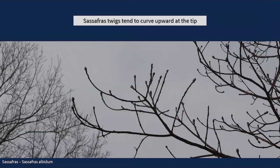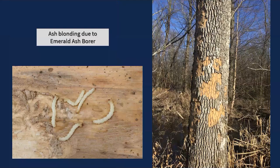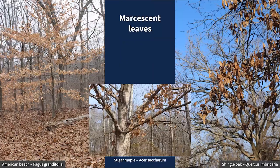A couple more unique feature examples: sassafras twigs tend to curve upward towards the tip, which is really noticeable. Other examples include the spines on devil's walking stick, or the remnants of old fruit that stay throughout the winter on yellow poplar. One unfortunate unique feature now seen across Illinois that actually helps you identify ash trees is blonding due to emerald ash borer — trees impacted by that pest tend to have bark sloughing off, which you can spot from a distance.